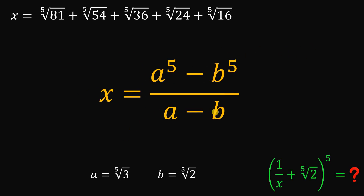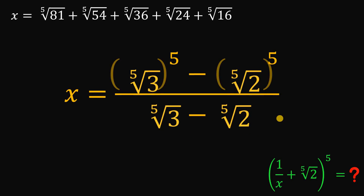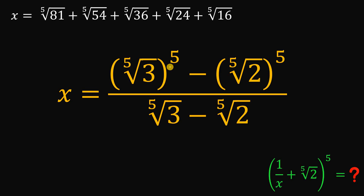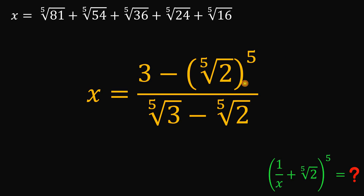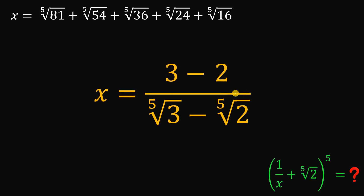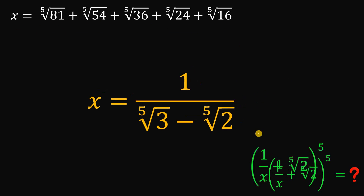Now let's substitute back the values of a and b. Since a is p-th root of 3 and b is p-th root of 2, we replace them accordingly. The p-th root of 3 raised to the fifth power is just 3, and the p-th root of 2 raised to the fifth power is just 2. So 3 minus 2 equals 1, meaning x equals 1 over (p-th root of 3 minus p-th root of 2). This is much simpler than the original expression.